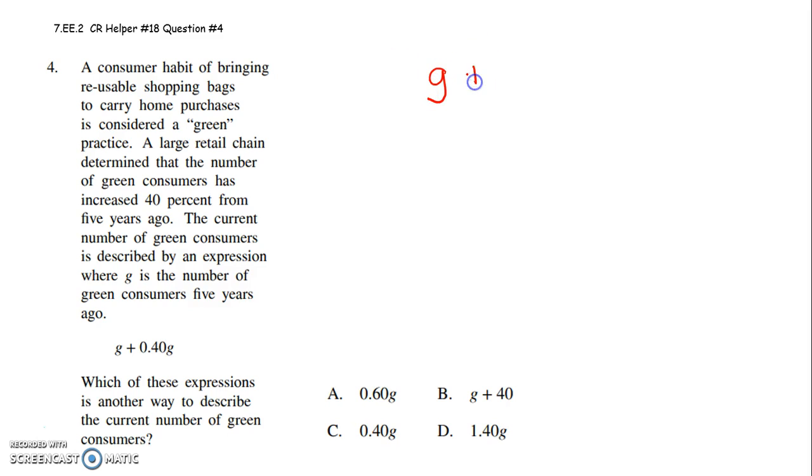They're asking you to take G and add it to 0.40G. The green customers increased by 40%. So this is finding 40% of the green customers because it's an increase, which is why you're adding it to the original green customers from 5 years ago, which you call G. But all of that we don't even have to worry about. You're literally simplifying this expression.